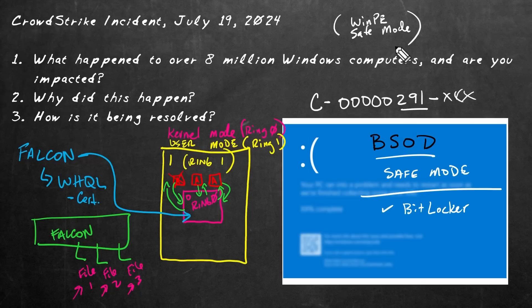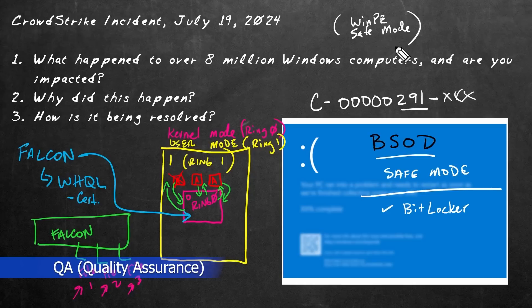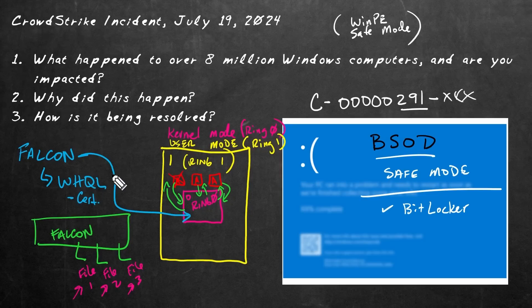And the final thing we should chat about is how could this be avoided? And the answer is QA. So even though the Falcon driver or the Falcon code itself, which was running at ring zero, is certified via WHQL from Microsoft, the updates that they were doing obviously were not thoroughly tested enough to prevent the blue screen of death. So the two solutions would be: one is better QA on the updates for the Falcon software. Or secondly, they could run the Falcon software not in ring zero in kernel mode, but rather run it as an application, which might degrade some of its efficiencies in identifying malware. But at least if it crashed, it would only crash itself and it wouldn't cause the entire system to crash.